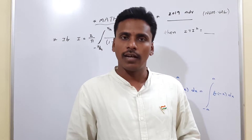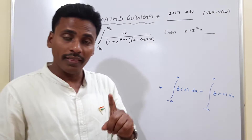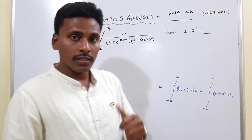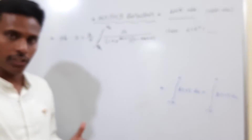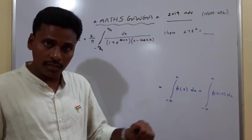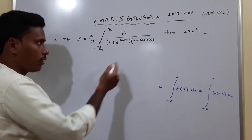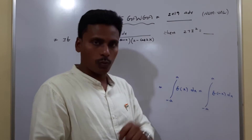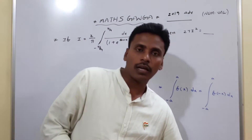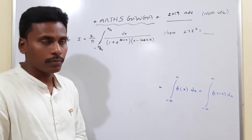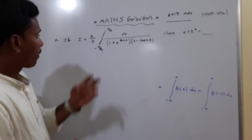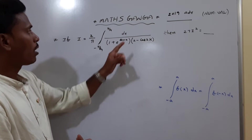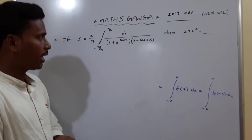Hello friends, this is Gangadhar with another question from JEE Advanced 2019, from the topic of definite integration. The question gives us an integral I equal to 2 by π of the integral from minus π/4 to π/4 of dx divided by (1 + e^(sin x)) times (2 minus cos 2x), and we need to calculate 27I². This is a numerical value type question.